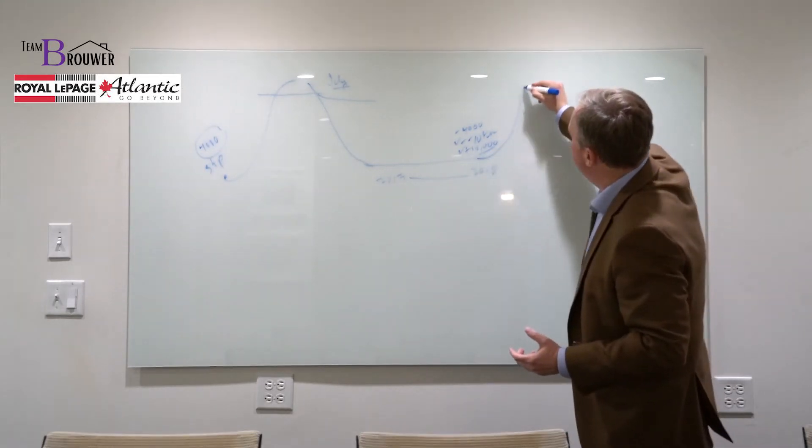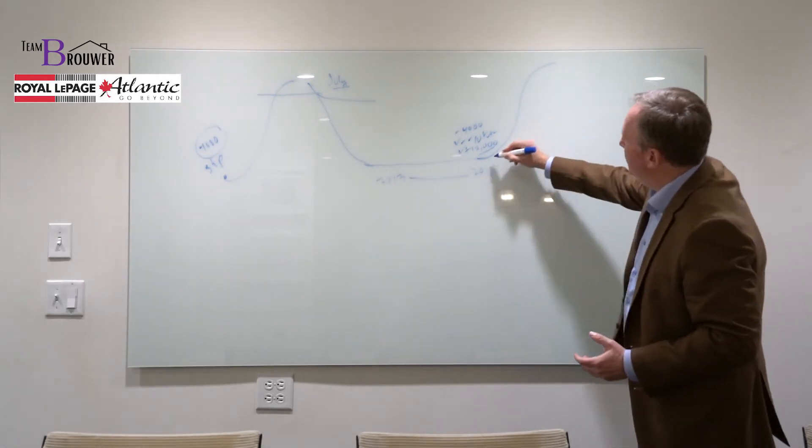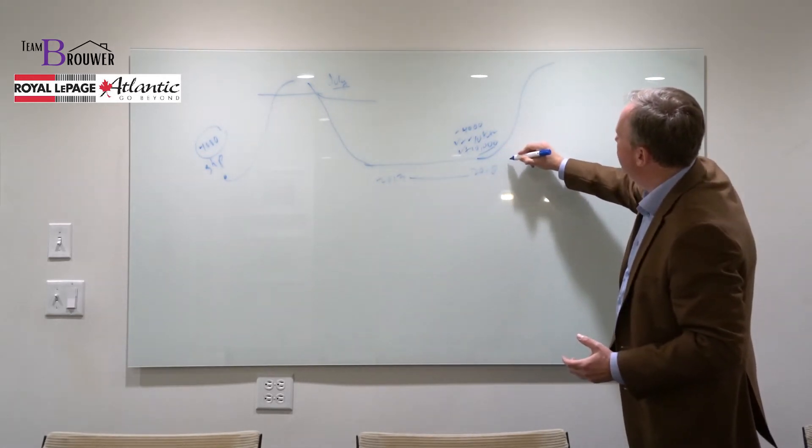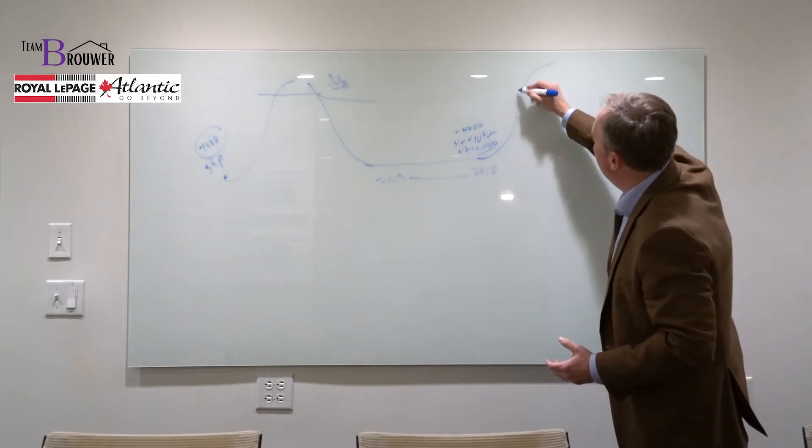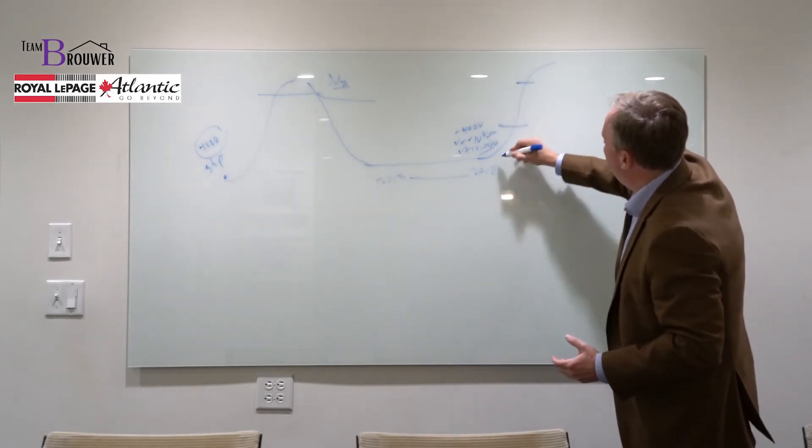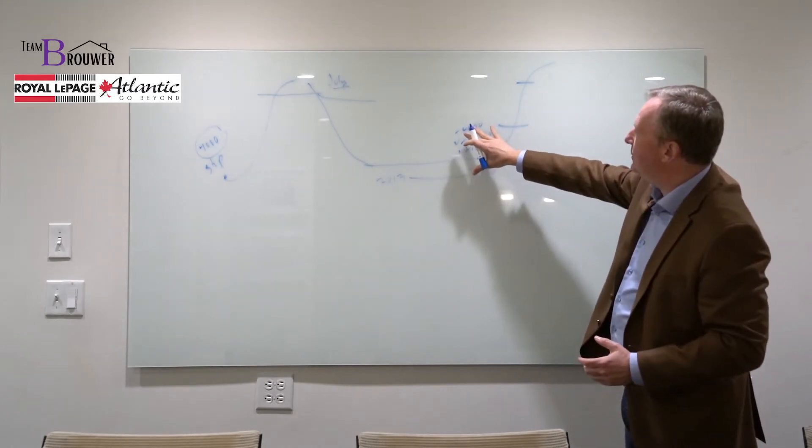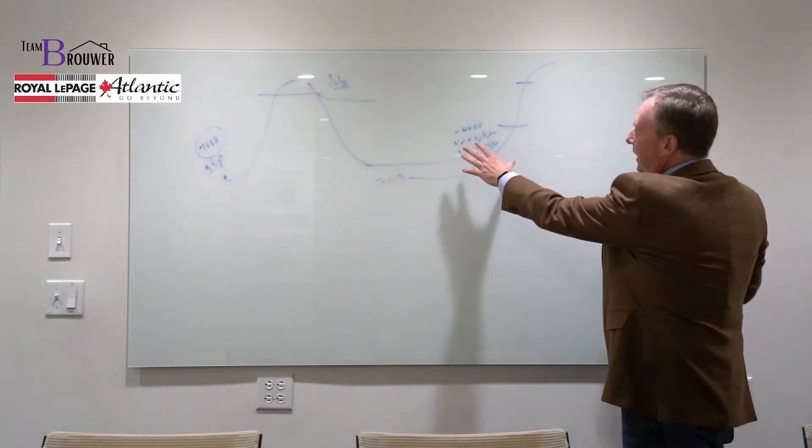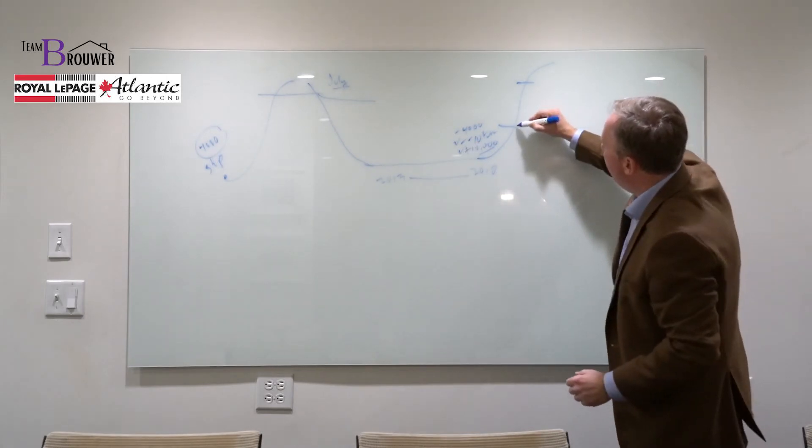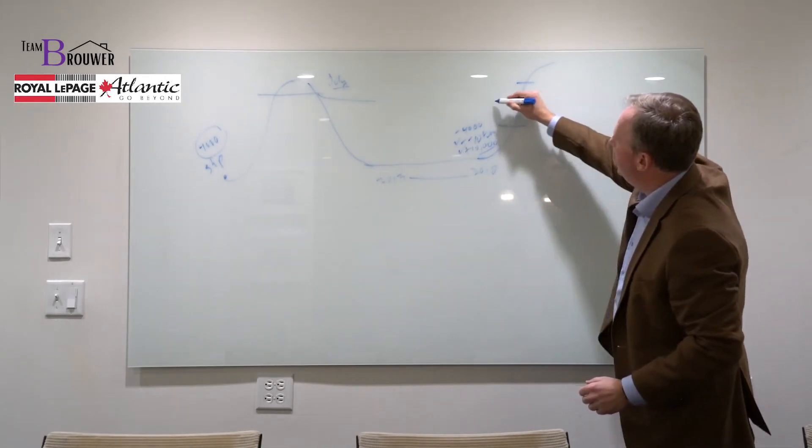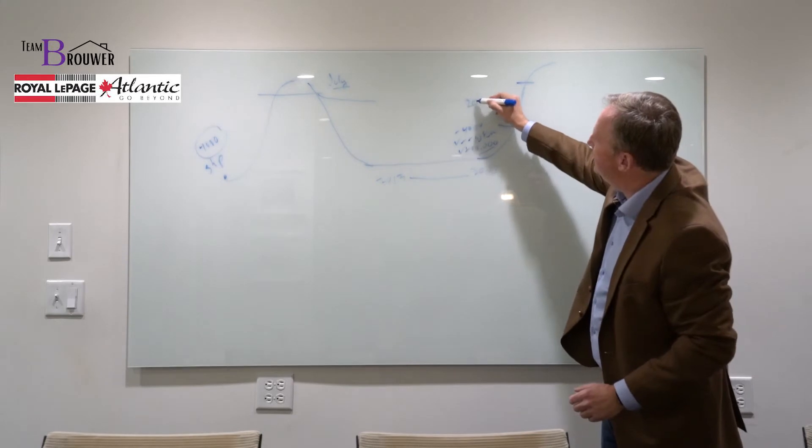We start seeing this skyrocketing market. So between 2018 and 2020 we go from a buyer's market where we have lots of available houses, there are more sellers than buyers, to a balanced market in 2020 where all of a sudden our inventory starts decreasing.